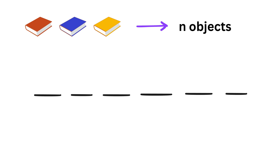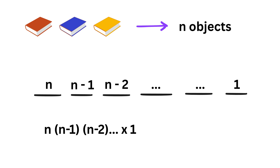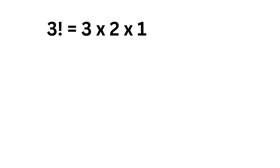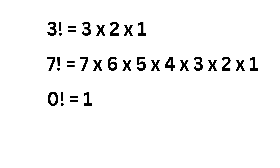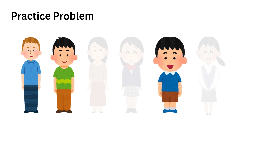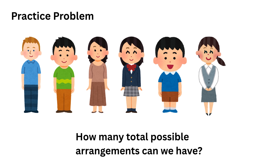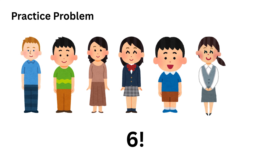In general, if you have n objects, for the first position you have n choices, for the second n minus 1, then n minus 2, and so on, until only one choice remains for the last position. The product of all these numbers is called n factorial. For example, 3 factorial is 3 multiplied by 2 multiplied by 1, and 0 factorial is defined as 1. Consider this practice problem: a school is organizing a lineup of 6 students — 3 boys and 3 girls — for a class photo. The total possible arrangements are 6 factorial, or 720.